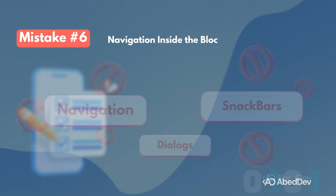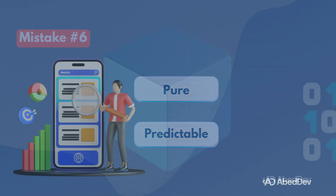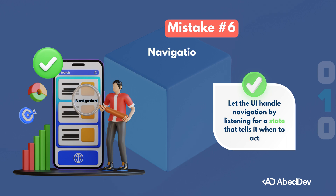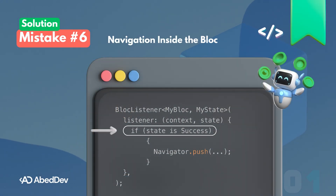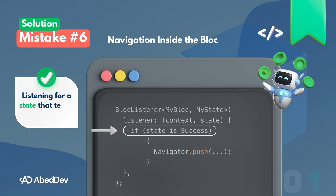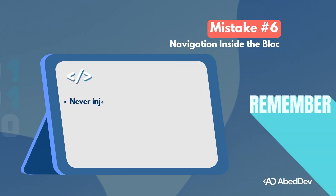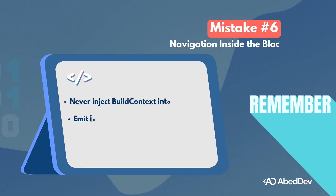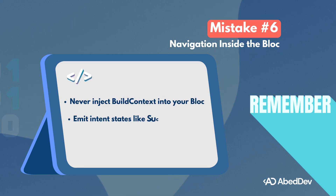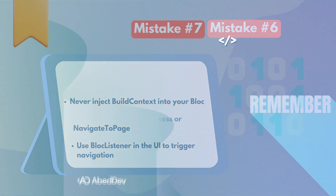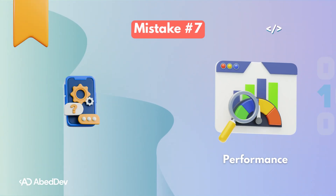Blocs should only manage state — not navigation, not snack bars, not showing dialogs. The right way is to let the UI handle navigation by listening for a state that tells it when to act. Your bloc stays clean and testable, and your UI responds reactively to state changes. Never inject BuildContext into your bloc — emit intent states like 'success' or 'navigate to page' and use BlocListener in the UI to trigger navigation.